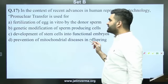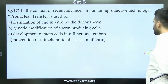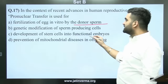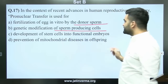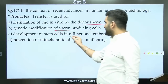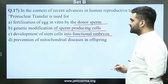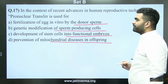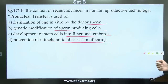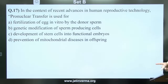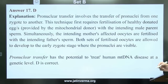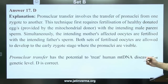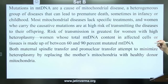Question 17 is in the context of recent advances in human reproductive technology. Pro-nuclear transfer is used for: fertilization of egg in vitro by donor sperm, genetic modification of sperm-producing cells, development of stem cells into functional embryos, or prevention of mitochondrial diseases in offspring. The answer to question 17 is D.